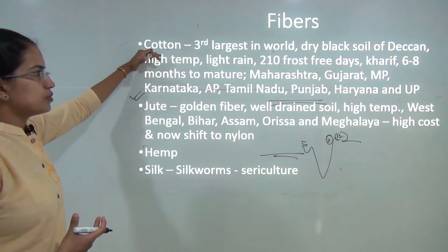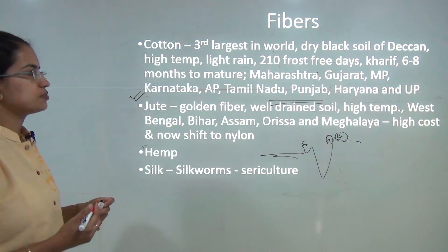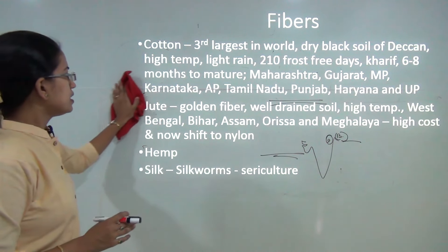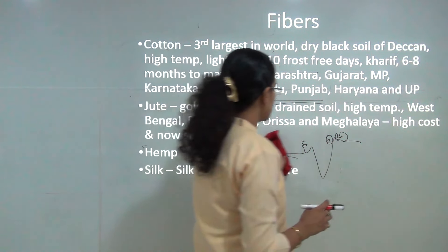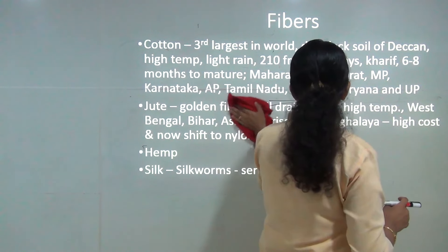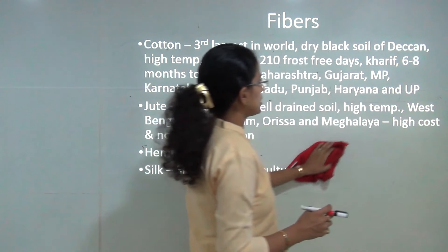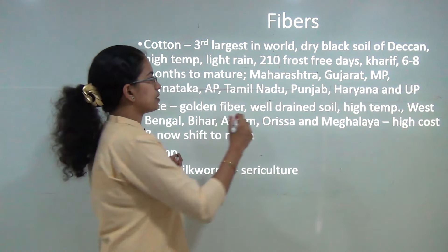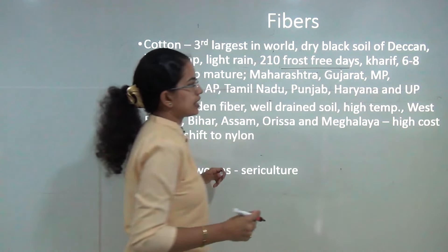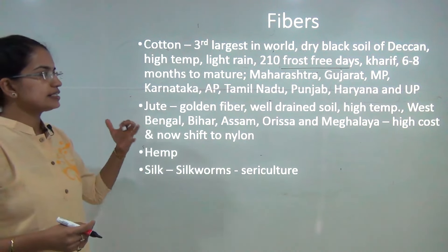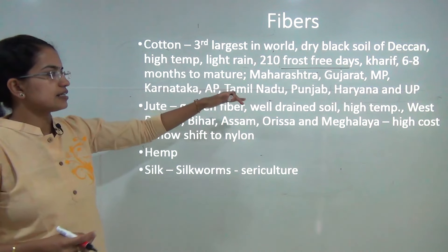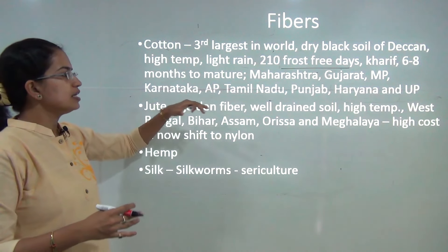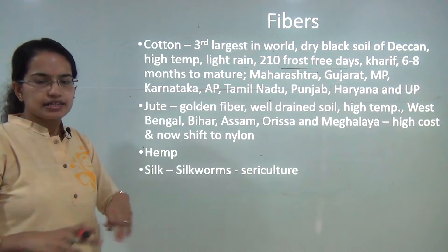Cotton: India is the third largest producer. It is grown technically in the black soil of the Deccan area. It requires high temperature, light rainfall, and most importantly 210 frost-free days per season. It takes six to eight months to mature, and cotton is grown mainly in the Deccan belt.